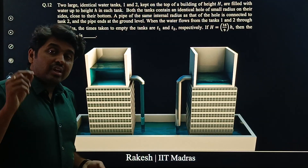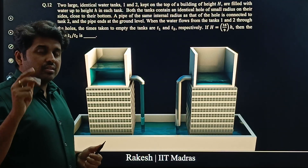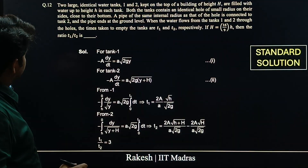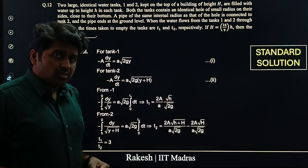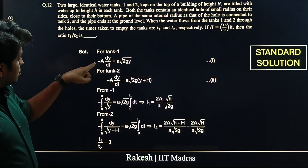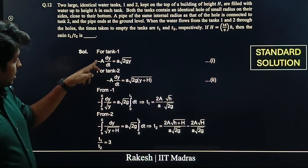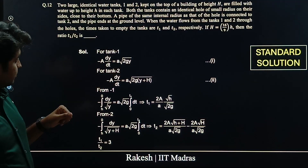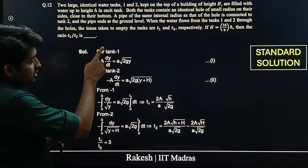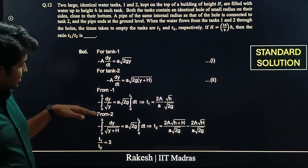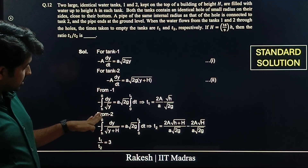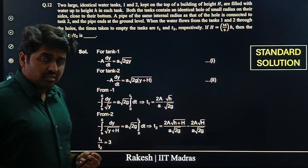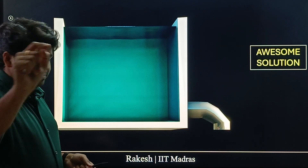I'm going to give you two solutions: the first is the standard solution and the second is the awesome solution. For the standard solution, using the equation of continuity, the flow rate through the hole equals the rate of fall of water in the tank. He integrates from height h to 0 for both tanks. You all know this method — let's move on to the awesome solution.